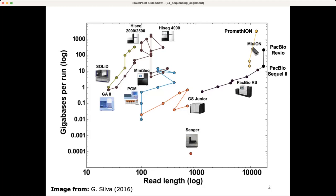If you want to sequence only a few amplicons, you probably want to choose either Oxford Nanopore technology or maybe Sanger sequencing. If you want to do whole genome sequencing, you'd probably choose either Illumina or PacBio sequencing, or the big machine of Oxford Nanopore technology.